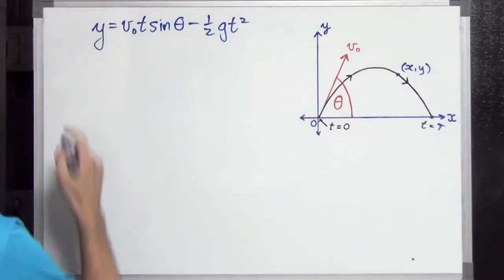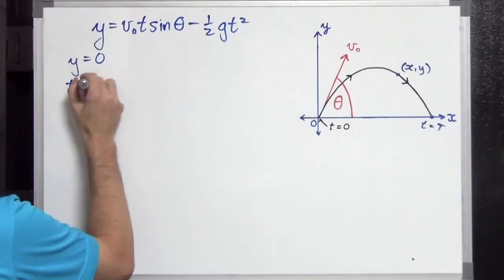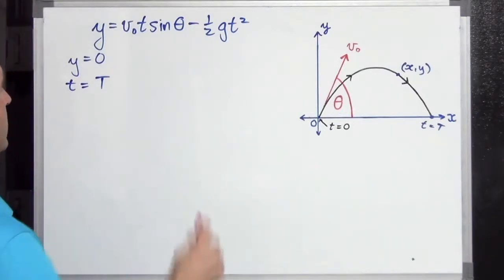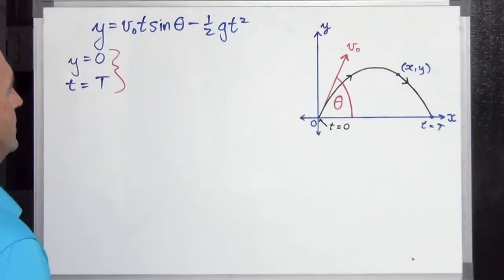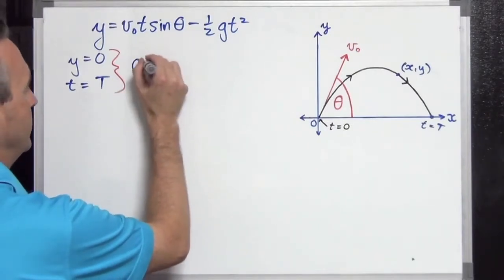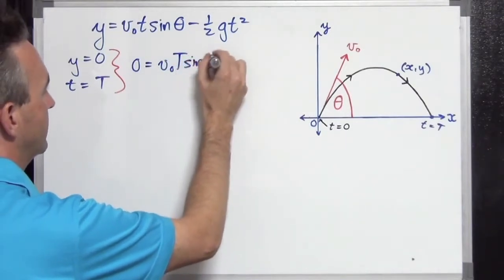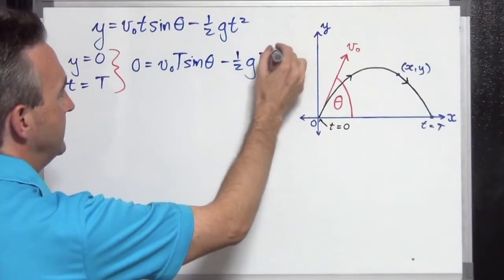Well, we can also assume that ground level is y equals zero. So we're going to substitute in y equals zero. And we're also going to say that little t is going to be the capital T, the time of flight that we want. Let's substitute these two values in to this equation here.